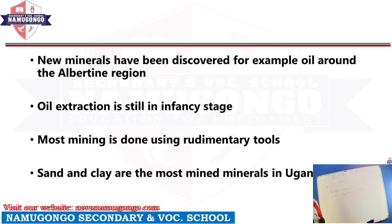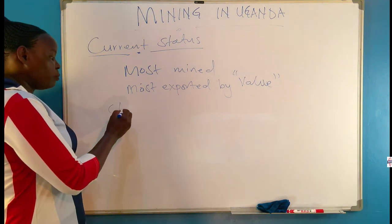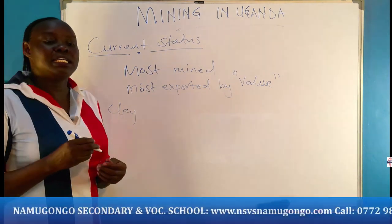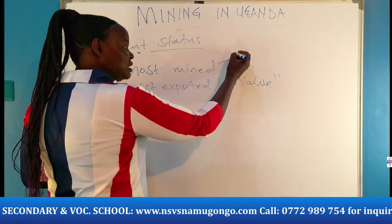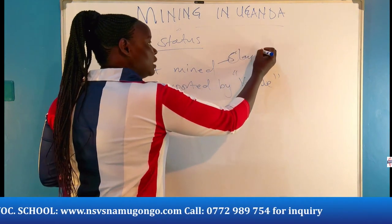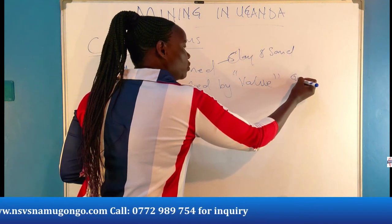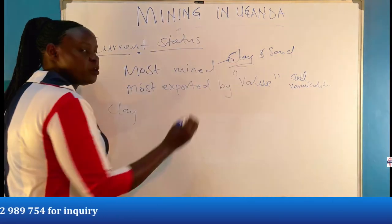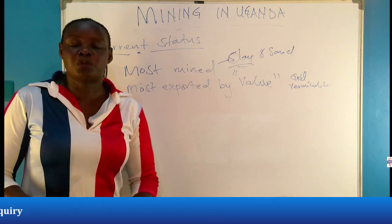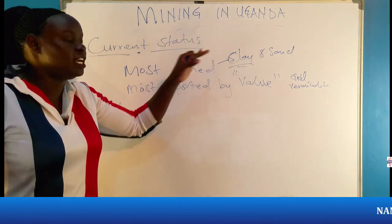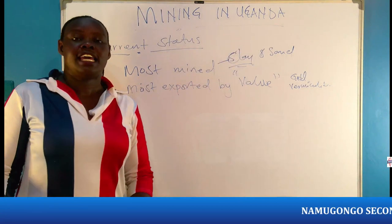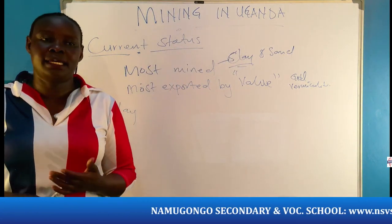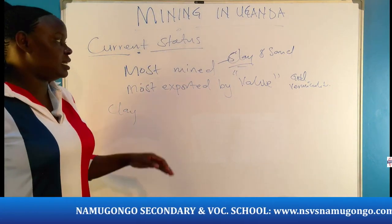Most mining today is done using rudimentary tools. For example, when people go for clay, they use hoes; others use sticks. The same with sand. Sand and clay are the most mined. When you go to Gulu, you'll find them mining clay. When you go to Kampala, you'll find them mining clay. When you go to Kitgum, you'll find mining of sand. Across the whole of Uganda, these are the most mined — per day, per month, annually.